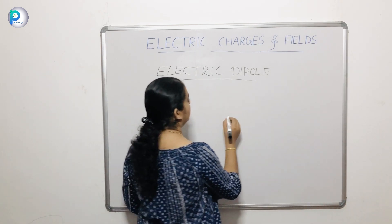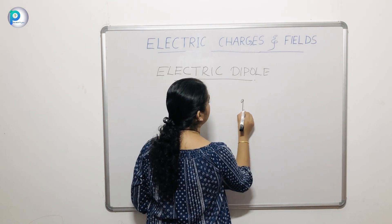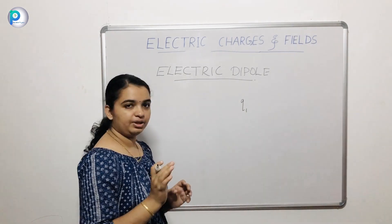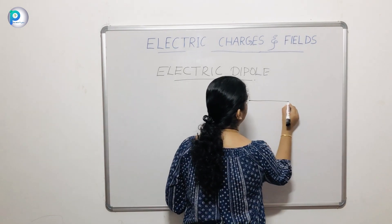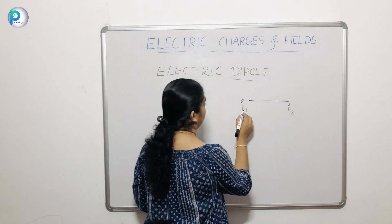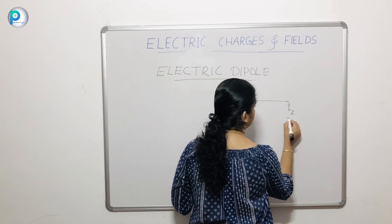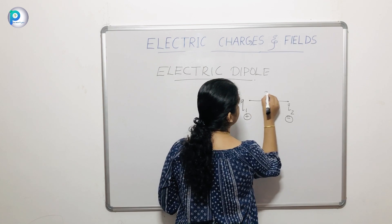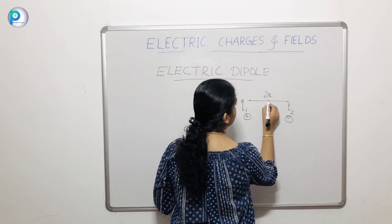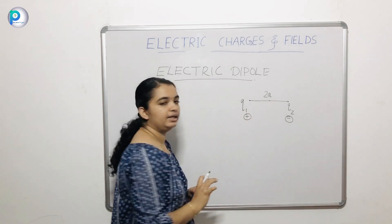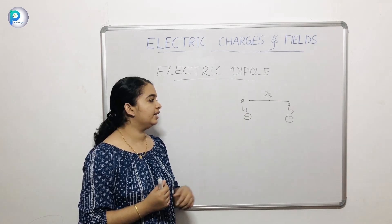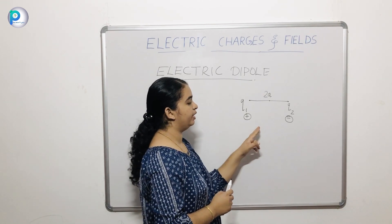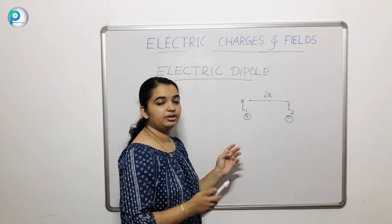Let's take the electric dipole. The electric dipole is two equal and opposite charges separated by a small distance. Let's take two charges Q1 and Q2 — let this charge be positive and this charge be negative. The distance between them is represented as 2A, and the center of this distance is called the dipole center. Since we have a positive charge and a negative charge, the total charge is 0.